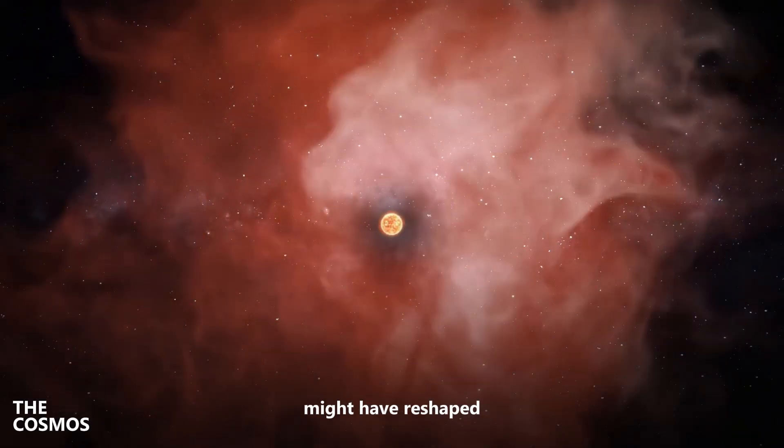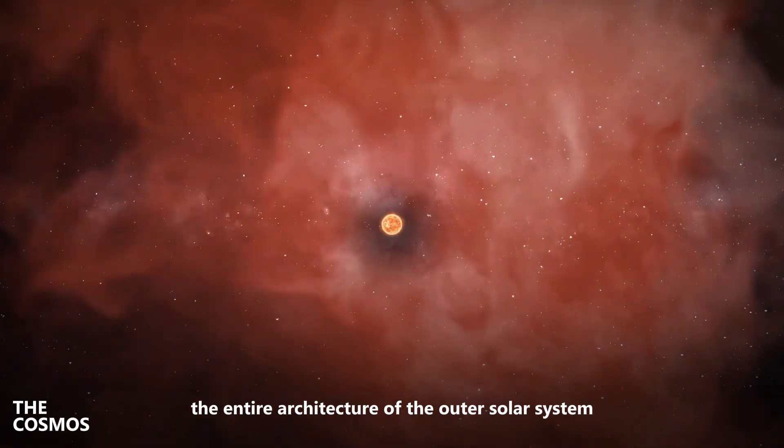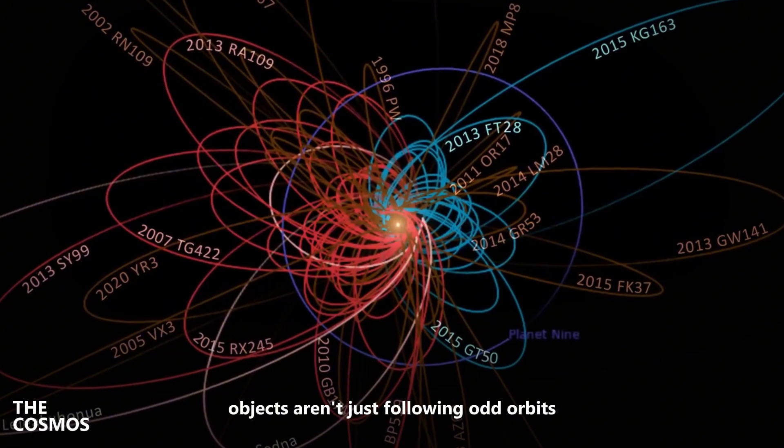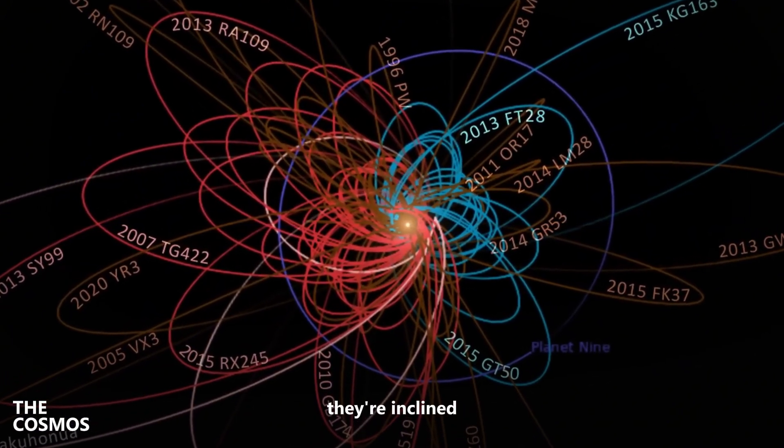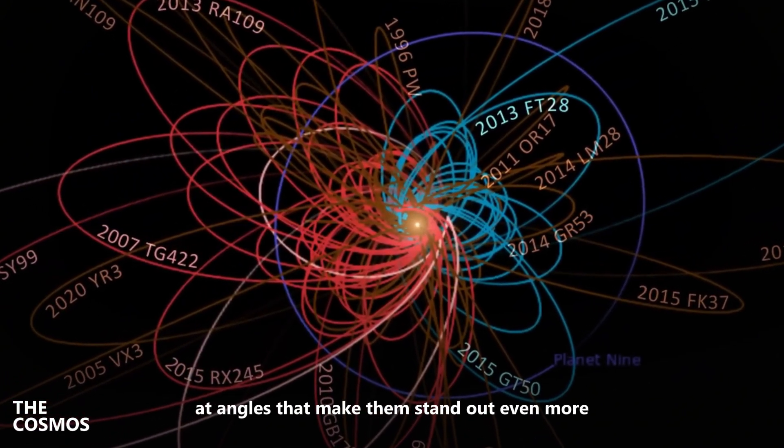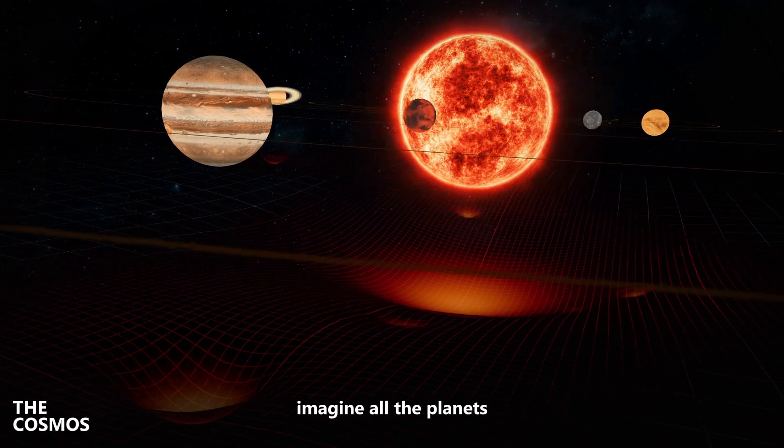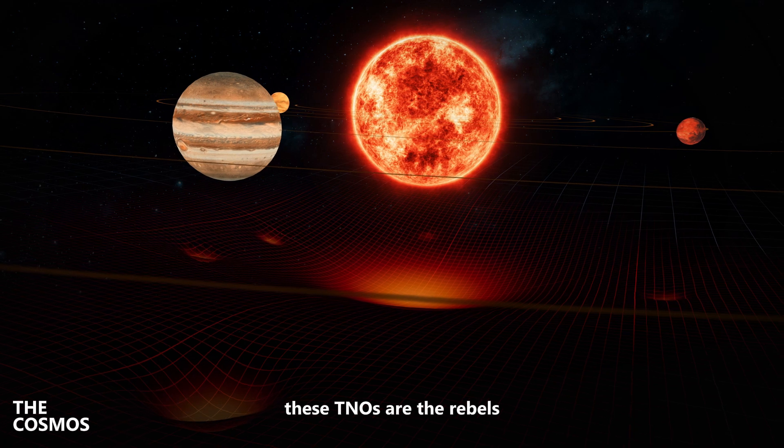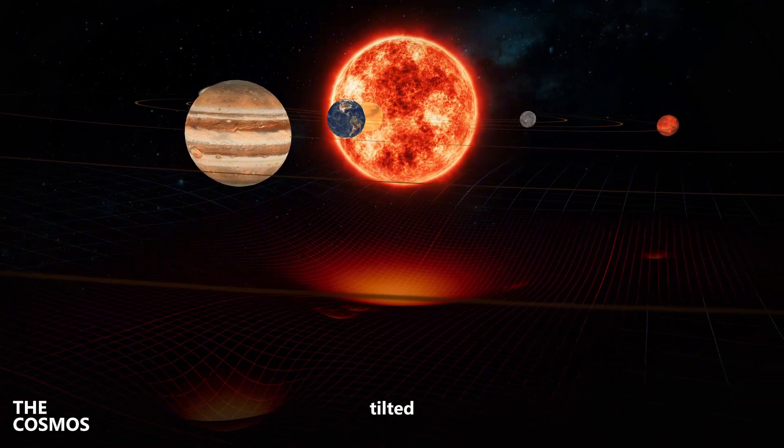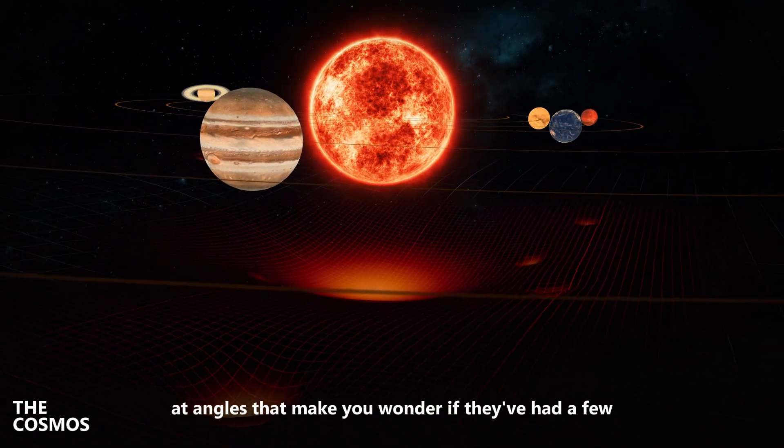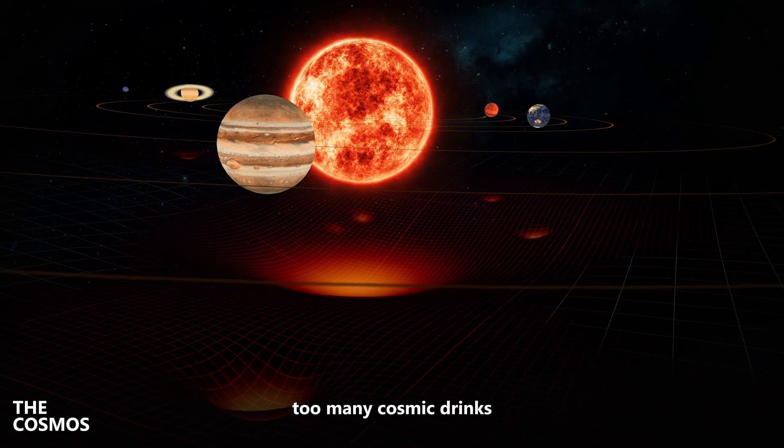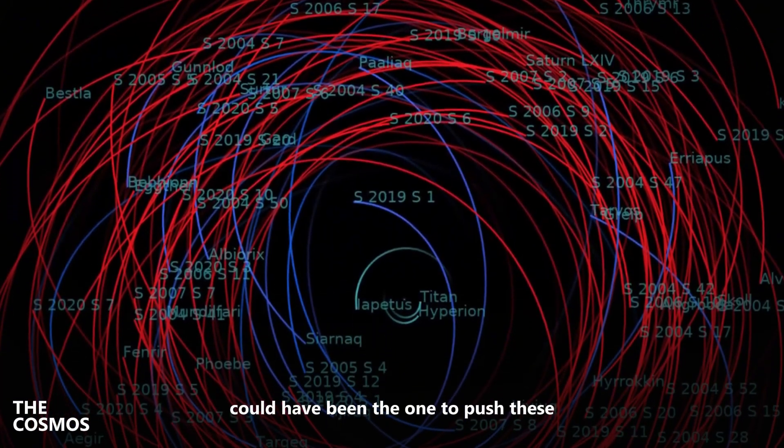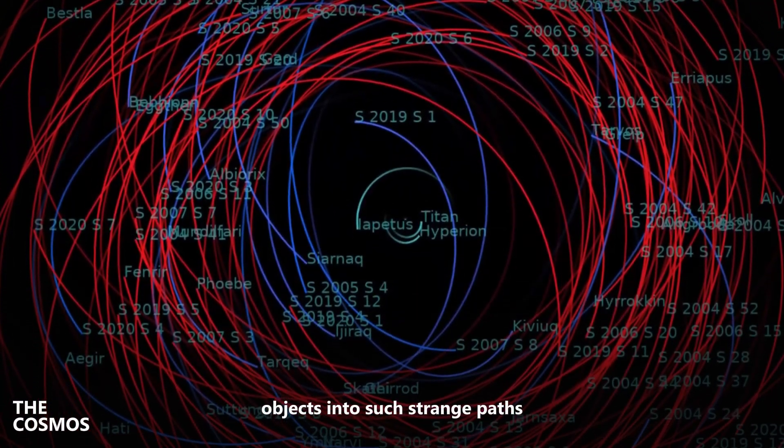This flyby might have reshaped the entire architecture of the outer solar system. Many of these distant objects aren't just following odd orbits, they're inclined at angles that make them stand out even more. Imagine all the planets in our solar system are on one big flat table. These TNOs are the rebels, tilted at angles that make you wonder if they've had a few too many cosmic drinks. The simulations suggest that this wandering star could have been the one to push these objects into such strange paths.